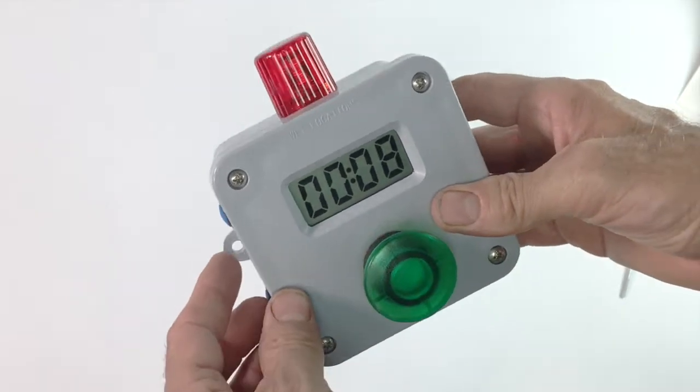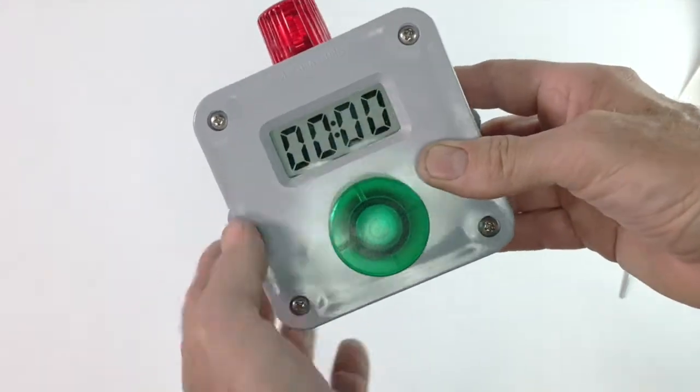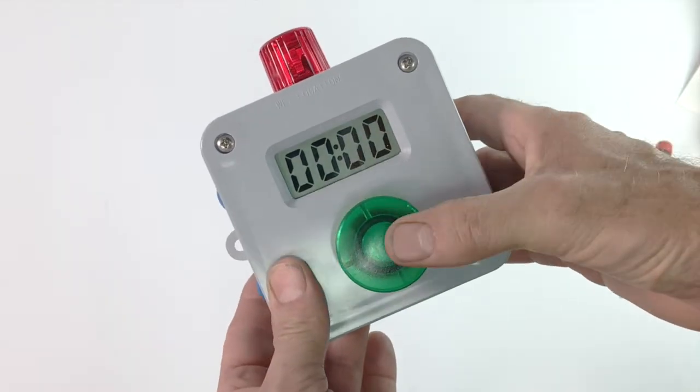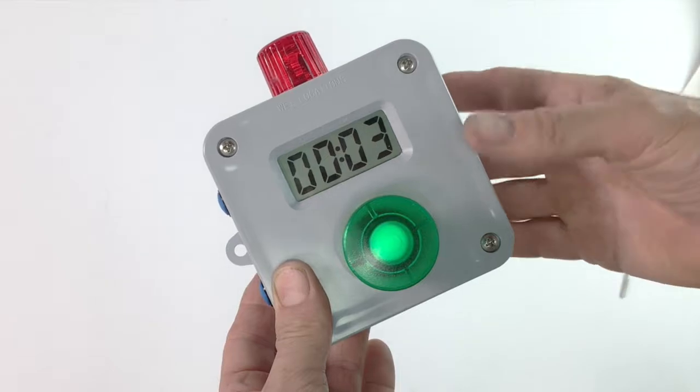And you can do the same thing counting up from zero. So we're just going to hit both of these buttons kind of like a kitchen timer and now we have a zero time set. And so now we'll count up from zero to any number at all.